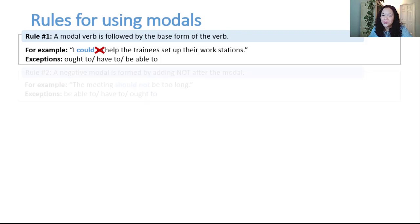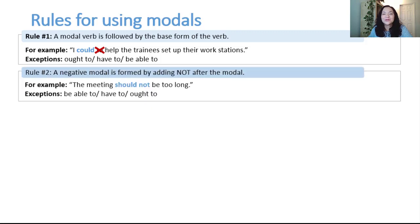Rule number two: a negative modal is formed by adding not after the modal. For example, the meeting should not be too long. Exceptions to this rule include be able to, I am not able to make the deadline, have to, you do not have to come into the office on Saturday, and in North America, it's a little strange for us to use ought to in the negative form, so we usually avoid it.